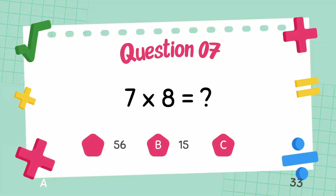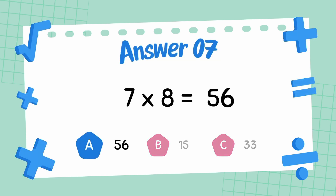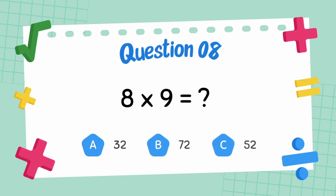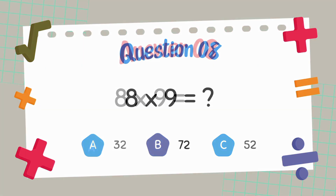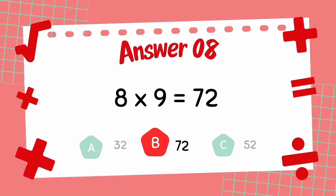What is 7 multiply 8? The answer is 56. What is 8 multiply 9? The answer is 72.